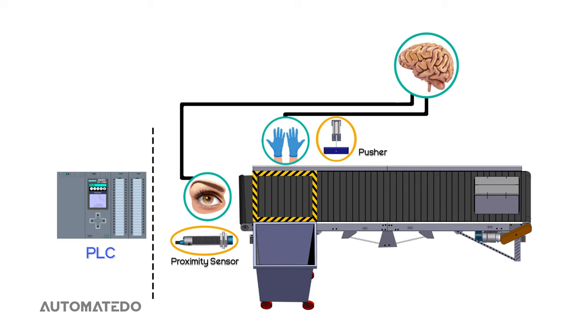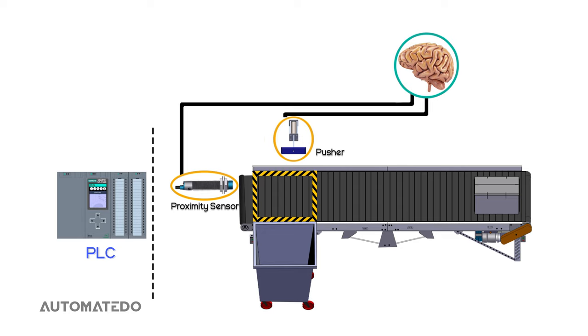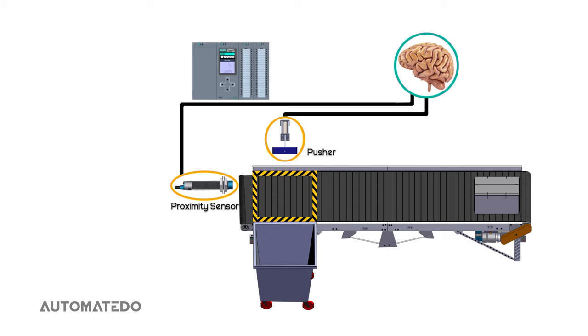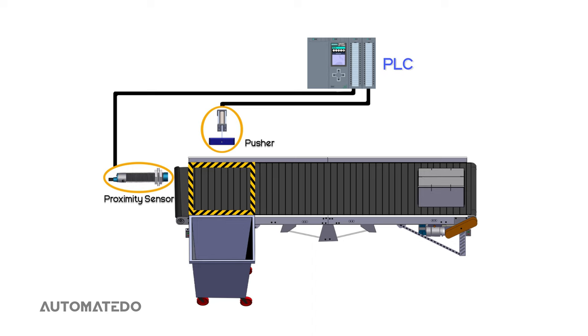Instead of using an eye and hands for this automation process, we can use a proximity sensor as an input, and a pusher as an output. And at last, we are going to replace the brain with the PLC.